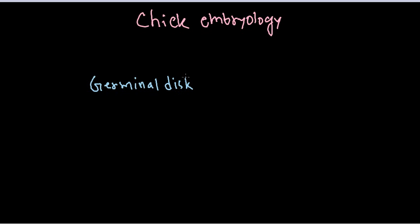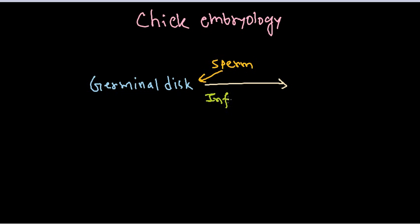The germinal disc is fertilized about 15 minutes after its production. This fertilization takes place in the infundibulum of the hen — the infundibulum is the place where fertilization actually occurs. This is a pre-egg condition. Sperm comes here and interacts with the germinal disc in the infundibulum, and then finally it gets fertilized.